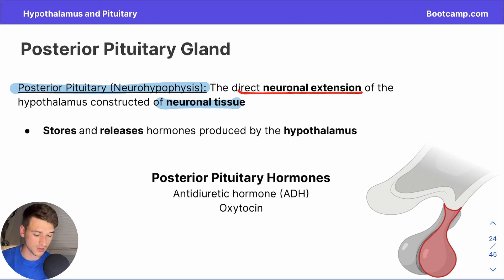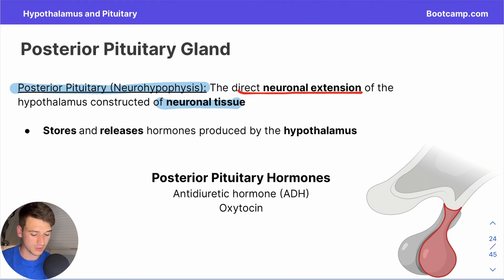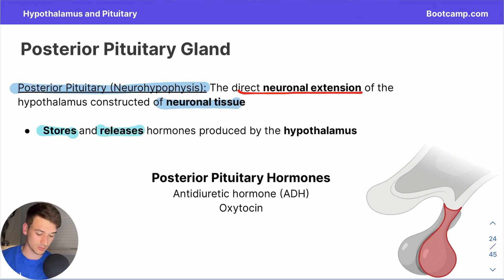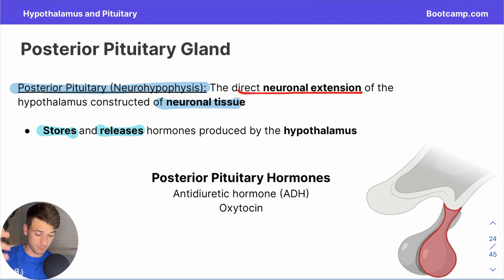This structural relationship is tied closely to the function of the posterior pituitary gland. The hypothalamus is responsible for the production of certain hormones, and the posterior pituitary is going to store those hormones and then be responsible for releasing them. The posterior pituitary is not producing its own hormones — it receives hormones produced by the hypothalamus and releases them. The two key hormones are antidiuretic hormone, or ADH, and oxytocin.